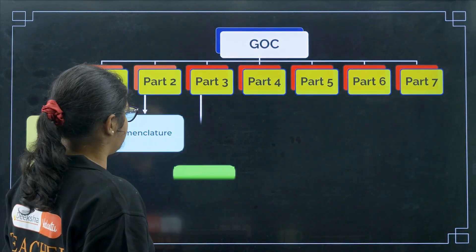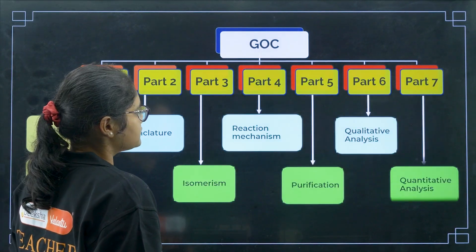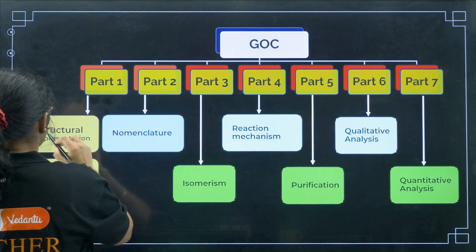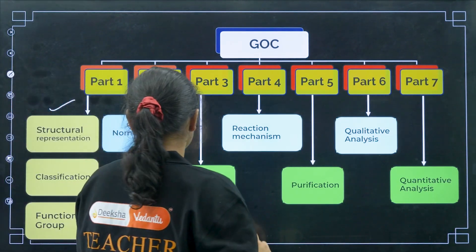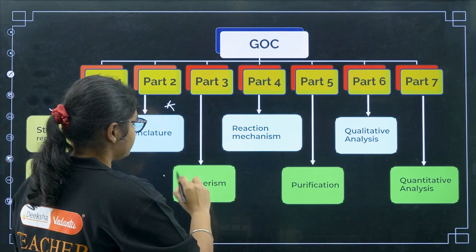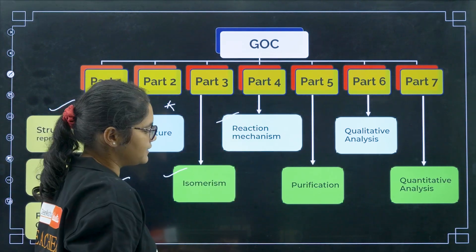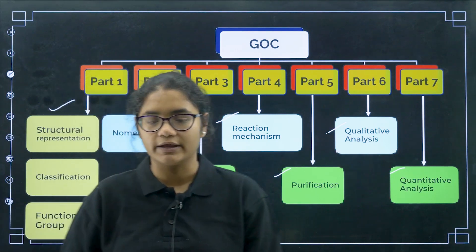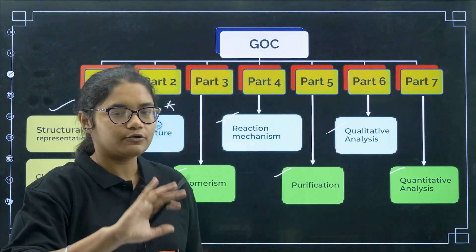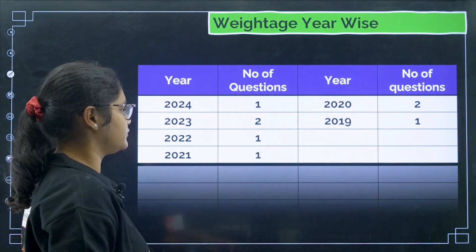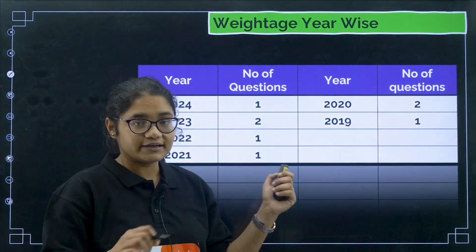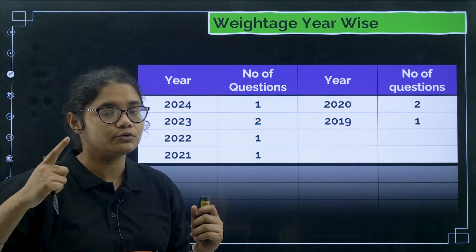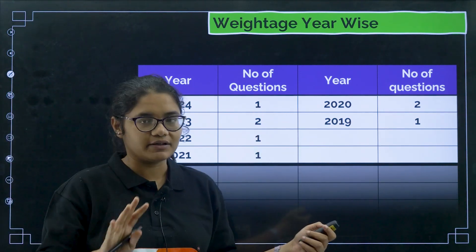I have made it in seven parts. In the first part, we will be discussing structural representation, classification and functional group. Next, very important, we will understand nomenclature, isomerism, reaction mechanism, purification, qualitative analysis and quantitative analysis. Though the weightage directly from this chapter is very less, it has very, very important applications in the PU2 chapters. So that is why this chapter is very important.